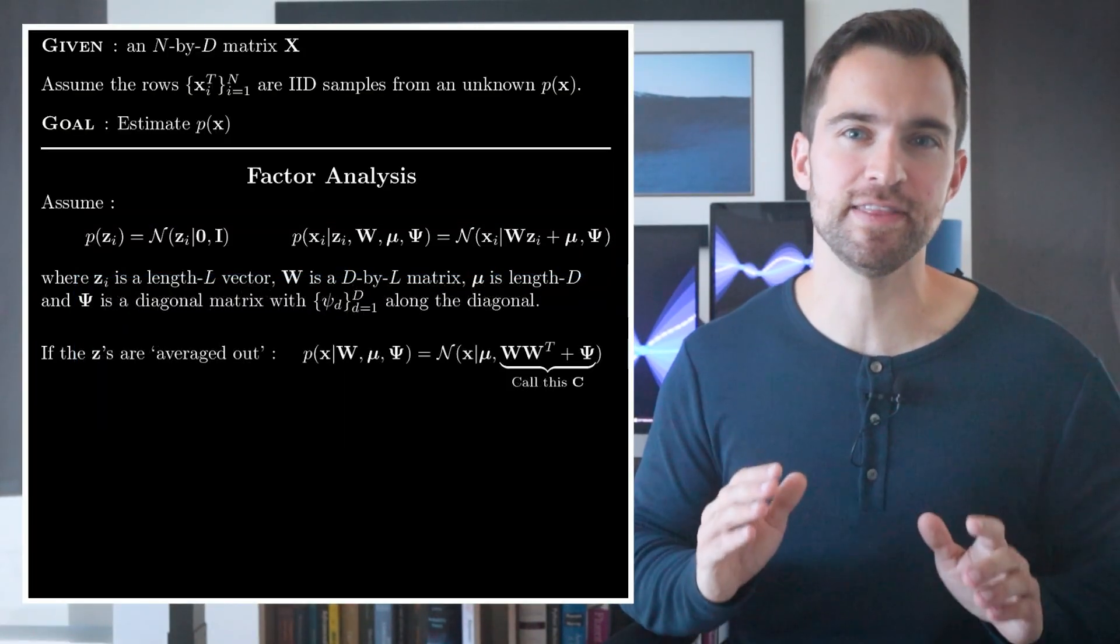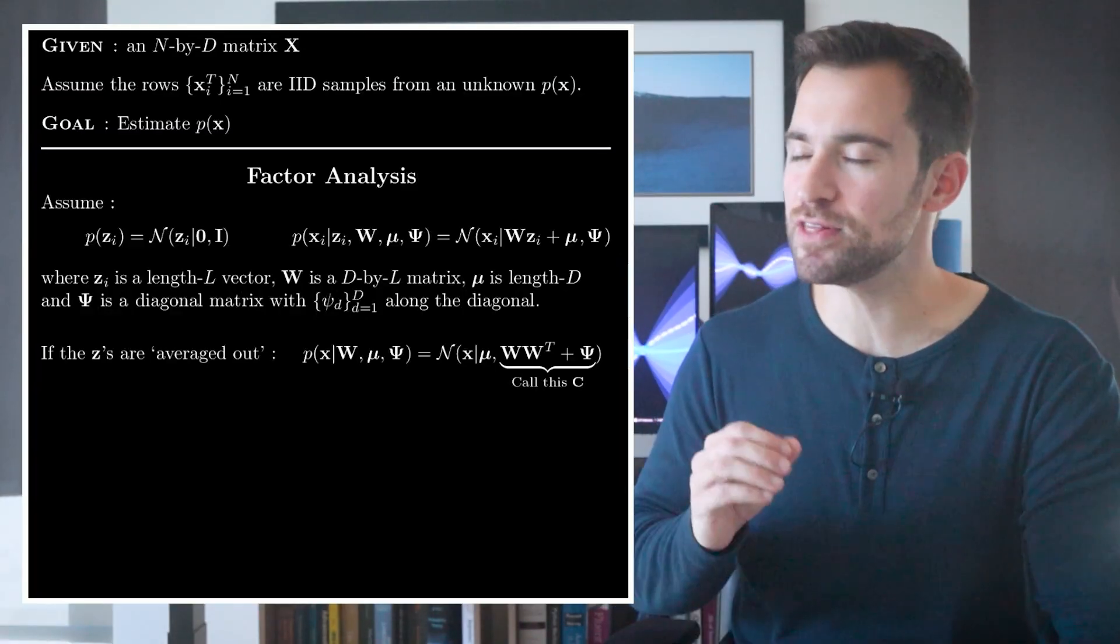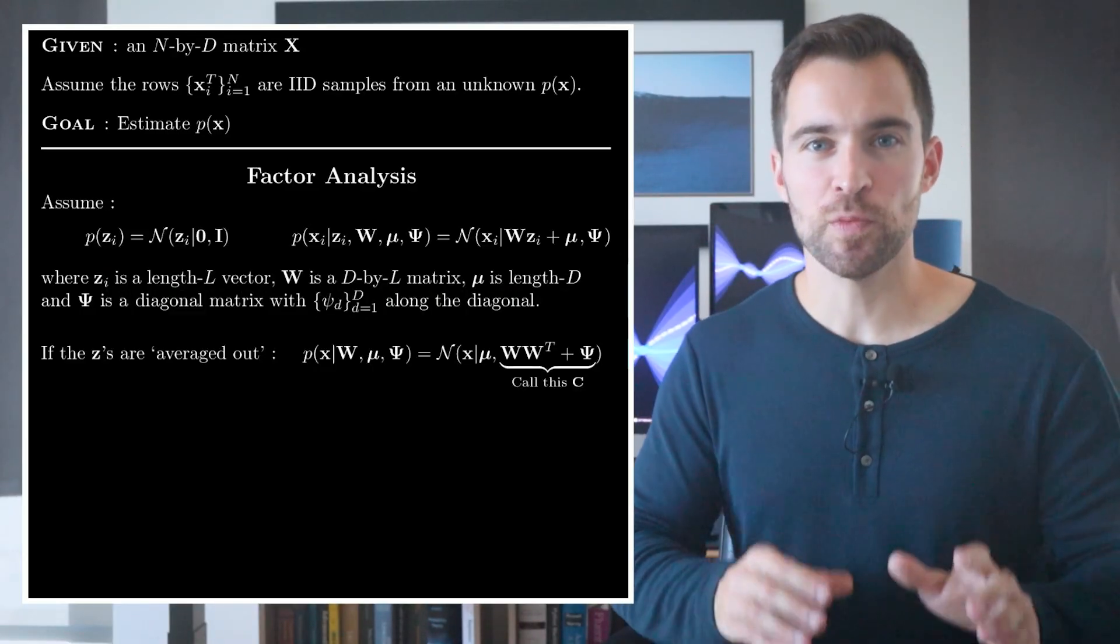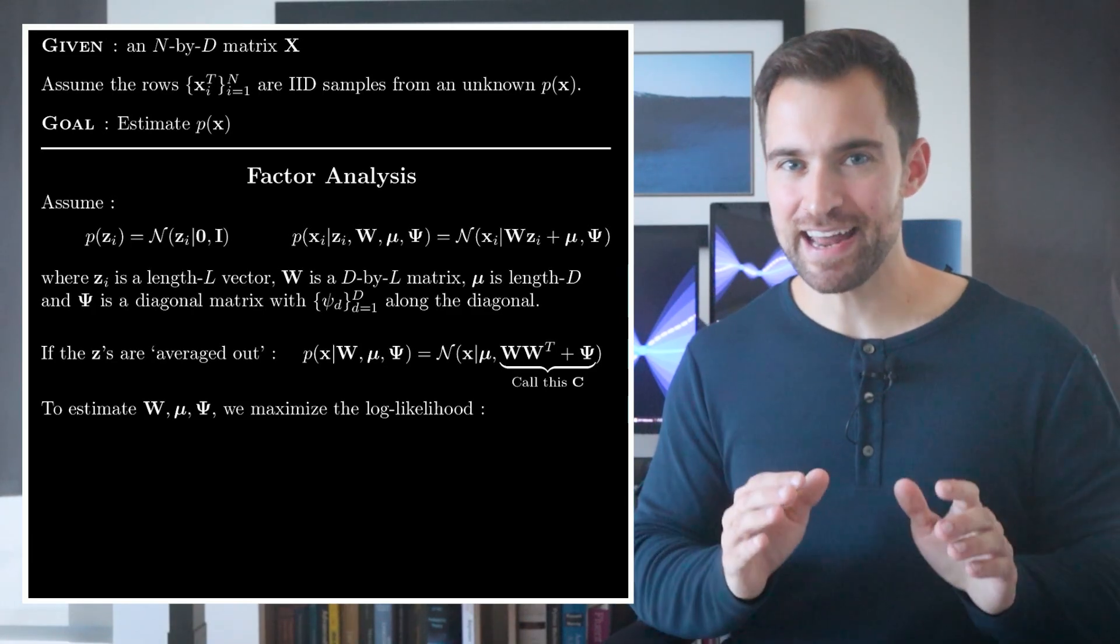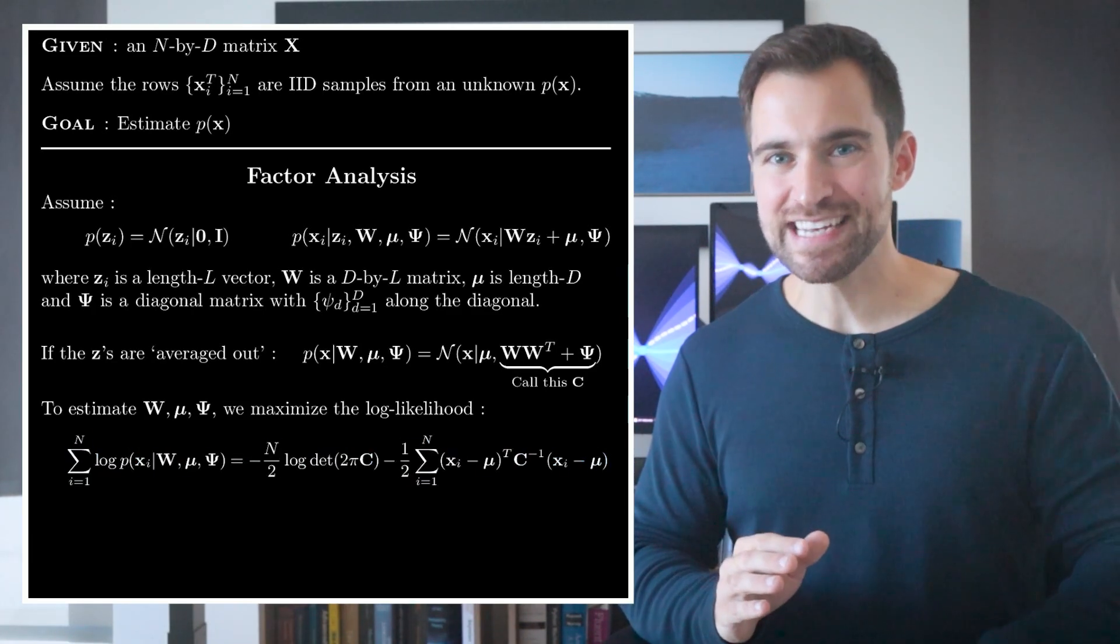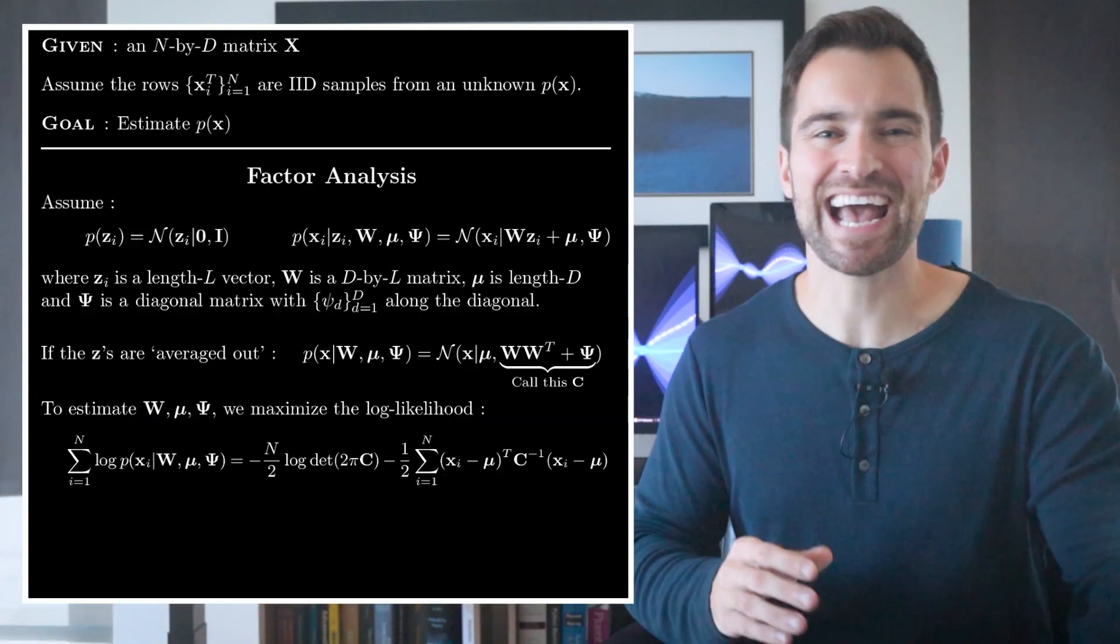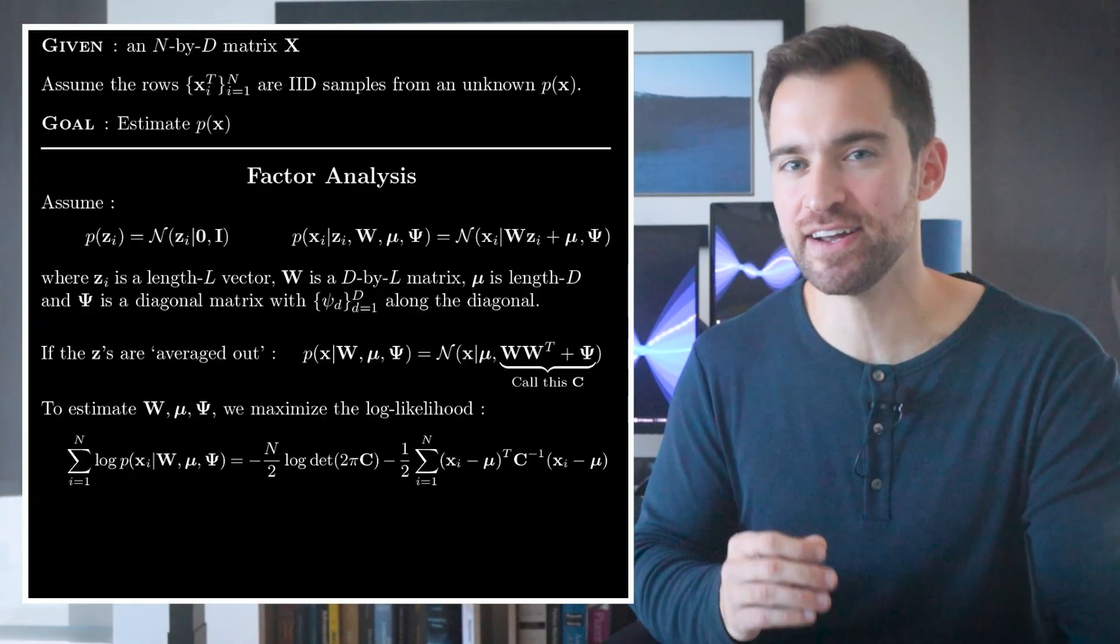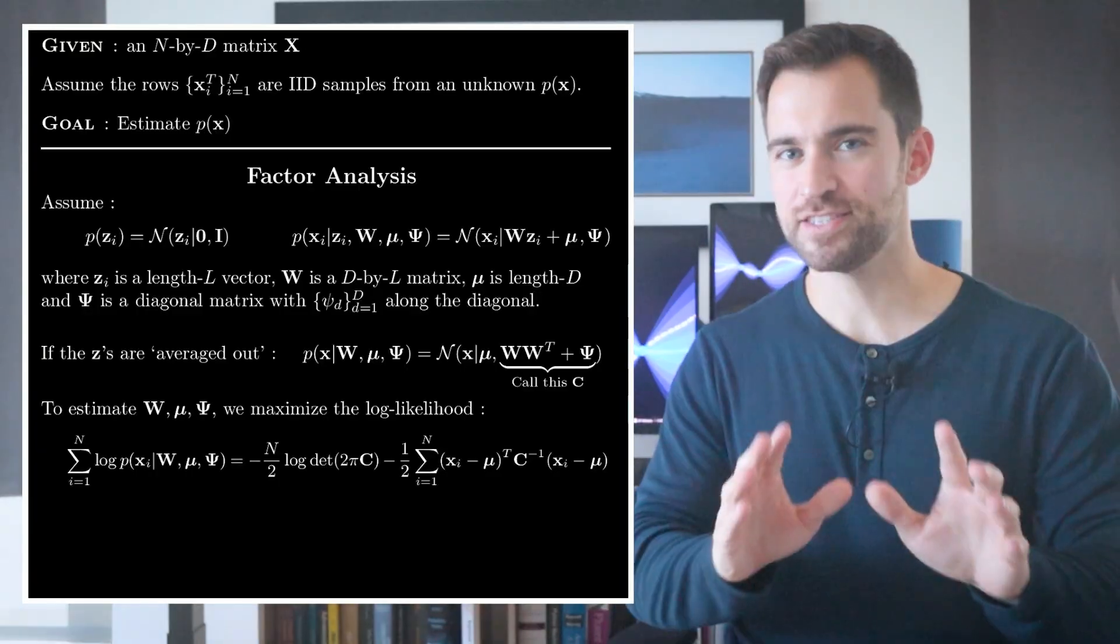Now we need to discuss how we actually fit this model. Given these assumptions and our observations of X, how do we learn our parameters? Well, as is quite often the case, we will fit this by maximizing the log likelihood of our data. That is, we want to maximize this. One thing to note is that the Zs are not here. That's because we only care about the distribution over X after you average out the Zs. The Zs are useful for generating synthetic data or dimensionality reduction, but we don't need them for maximum likelihood.